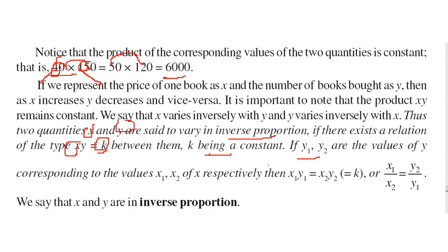So the two quantities x and y, they are set to vary in inverse proportion. But x into y remains same. In this case, x into y remains always 6,000. K is always constant. And y1, y2 are the values of y corresponding to x1 and x2. So we can say x1 y1 will be equal to x2 y2, which is equal to K. And the proportion becomes x1 by x2 will be equal to y2 by y1. This is the inverse proportion.